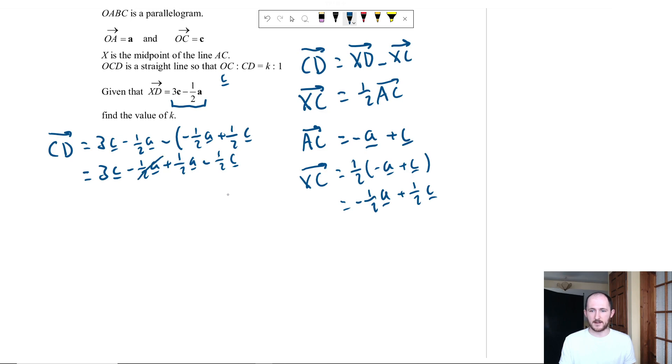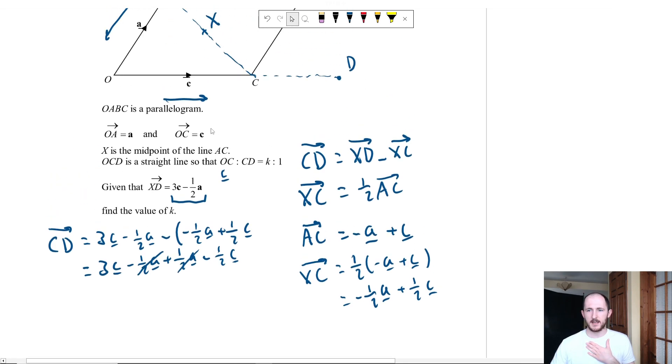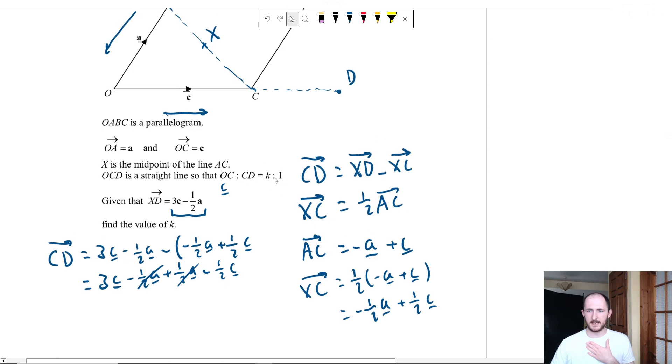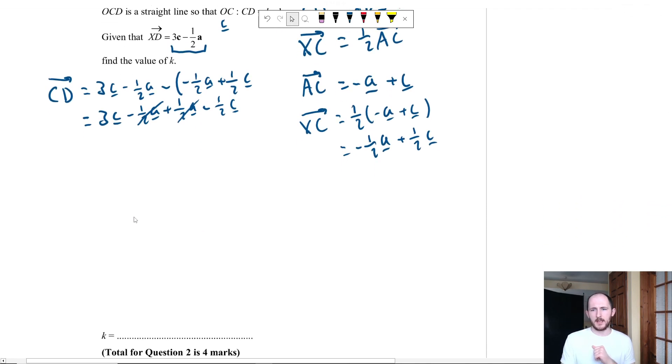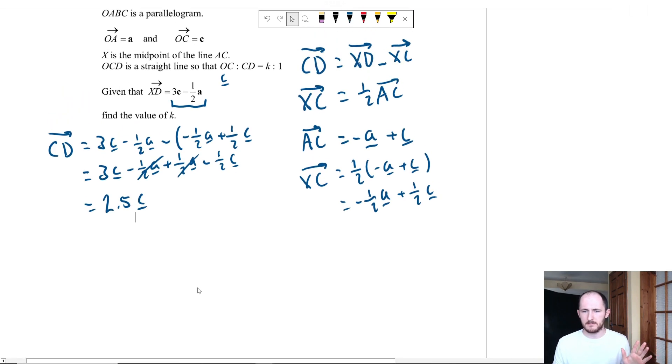So if you notice, these two things cancel, which I'm actually quite grateful for, because keep in mind, we were looking for the ratio of OC to CD. OC is just C. So if we had any A's in there, we'd be in trouble, because you can't multiply and get an A when you don't have one. So we have 3C minus a half C, so that would just be two and a half C, or 2.5C. You can do it as a fraction, you can do it as a decimal, it doesn't matter.